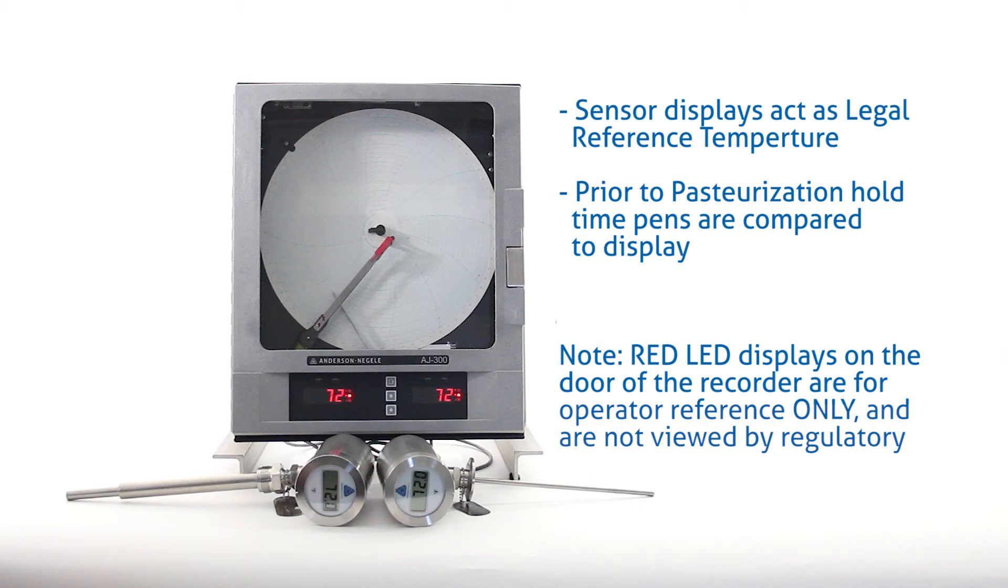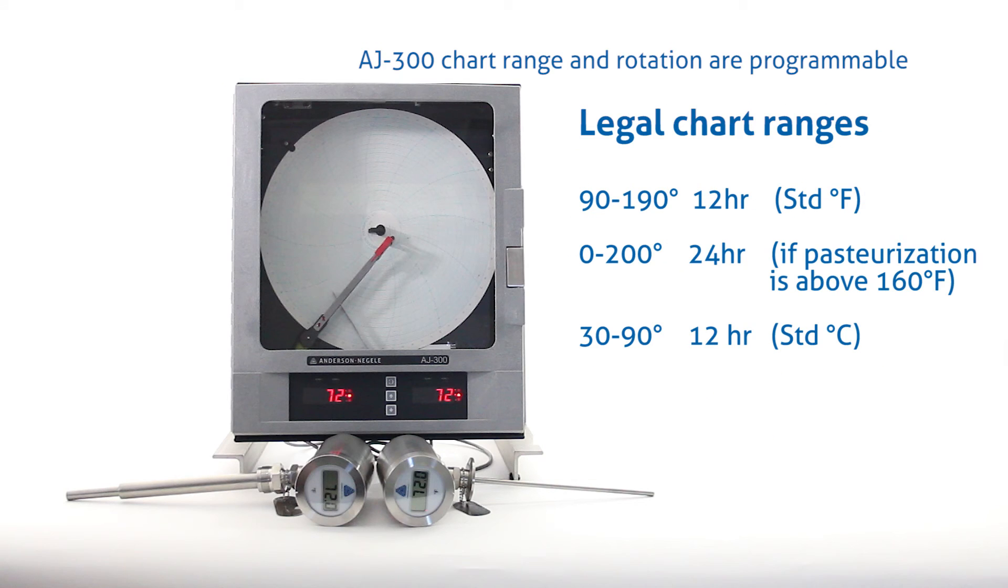Prior to the beginning of hold time for product pasteurization, the recording pens are compared to these displays. The red LED displays on the door of the recorder are for operator reference only and are not viewed by regulatory. The AJ300 chart range and rotation are programmable.